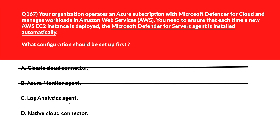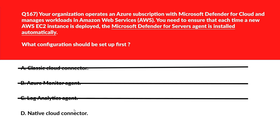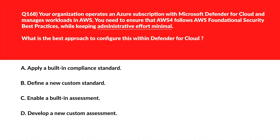Option C, the Log Analytics Agent, gathers security logs but doesn't perform automatic agent installation for Defender for Servers on AWS workloads — wrong. Option D, the Native Cloud Connector, integrates AWS with Defender for Cloud, enabling automated deployment of the Microsoft Defender for Servers agent on new AWS EC2 instances. Option D is the right choice.